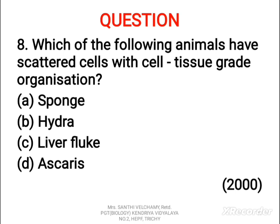The eighth question: which of the following animals have scattered cells with cell tissue grade organization? A) Sponge, B) Hydra, C) Liver fluke, D) Ascaris. The correct answer is B, Hydra. Hydra has tissue level of organization — its body is multicellular and the cells occur in two distinct layers or tissues of specialized cells, showing cellular level of organization.